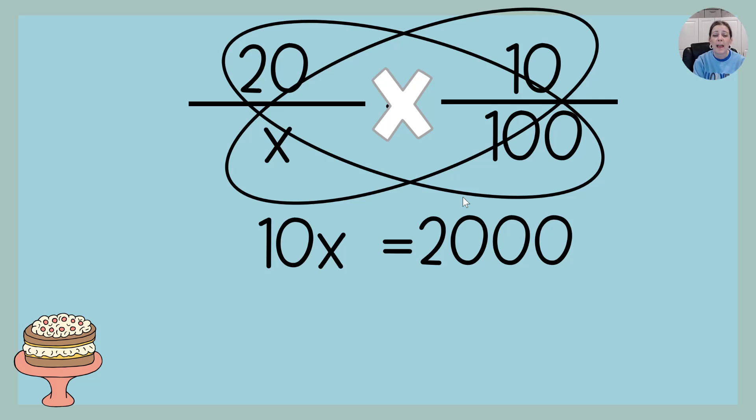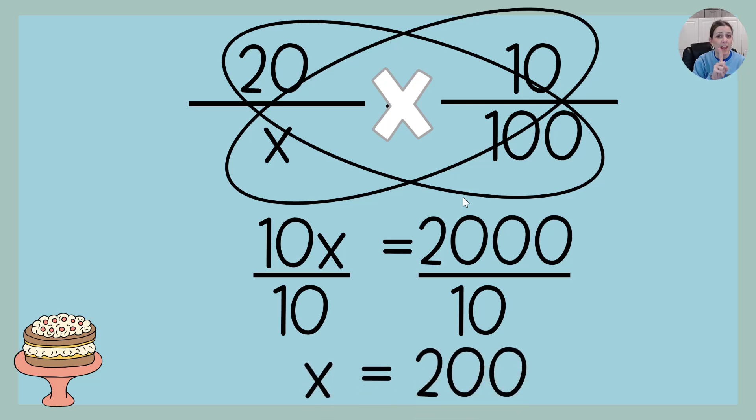In order to figure that out, we're going to do the opposite, and we're going to divide by 10 on both sides. 10 divided by 10 is 1, so that just is 1X, and 2,000 divided by 10 is 200, so X is 200.